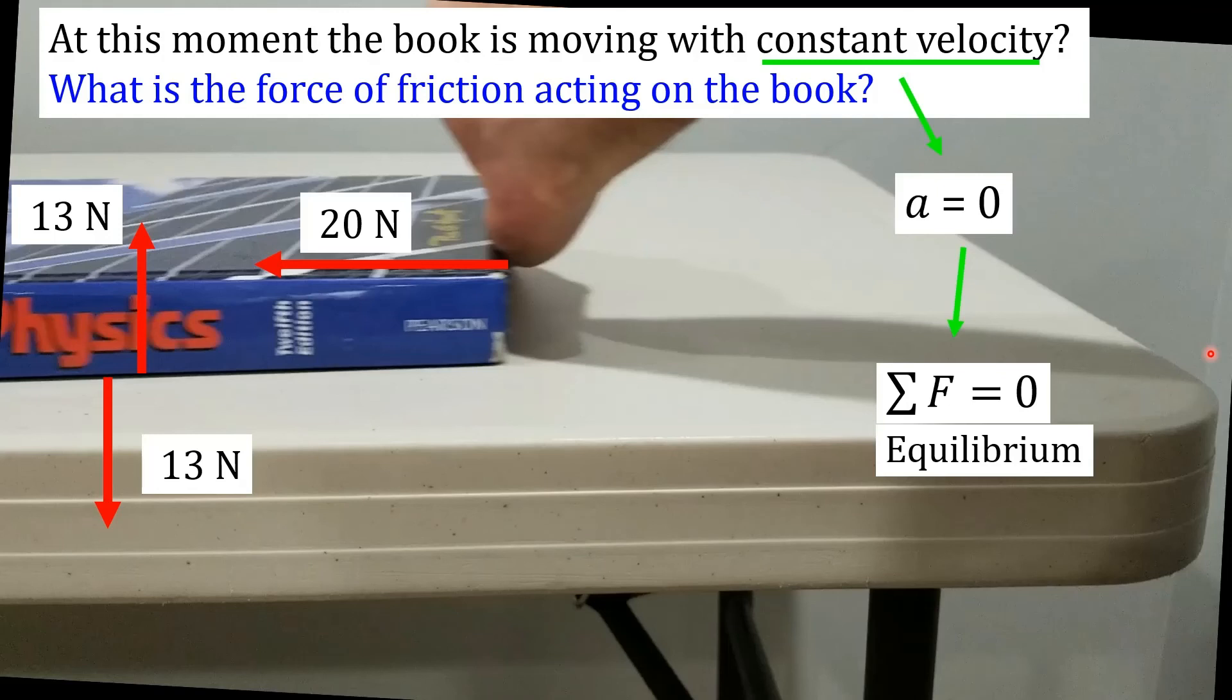So let's use that to determine our frictional force. Here, our vertical vectors cancel out just fine. It was this horizontal one that we were dealing with. Friction, in order to give us a net force of zero, has to be opposing or opposite my push in this case. That's going to go to the right. We'll call that our friction vector. And in order to get a net force of zero, that's going to be exactly 20 newtons.